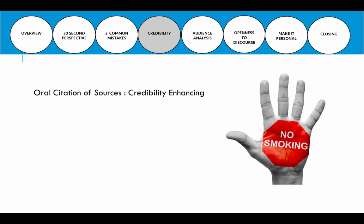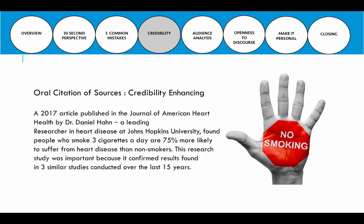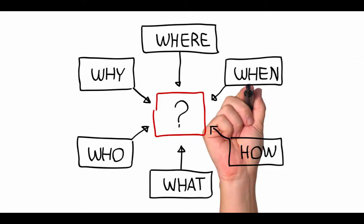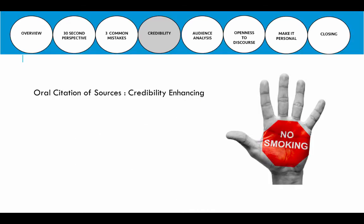Here's the improved oral citation: 'A 2017 article published in the Journal of American Heart Health by Dr. Daniel Hahn, a leading researcher in heart disease at Johns Hopkins University, found that people who smoke three cigarettes a day are 75% more likely to suffer from heart disease than non-smokers. This research study was important because it confirmed results found in three similar studies conducted over the last 15 years.'